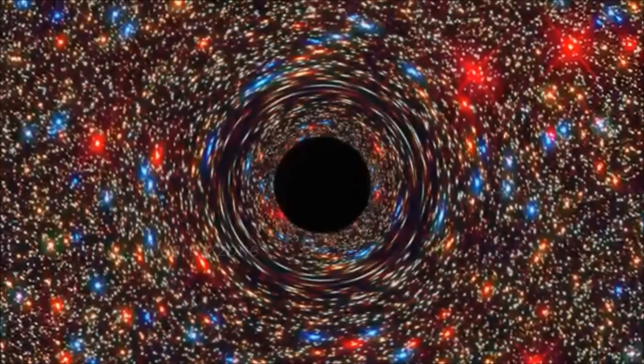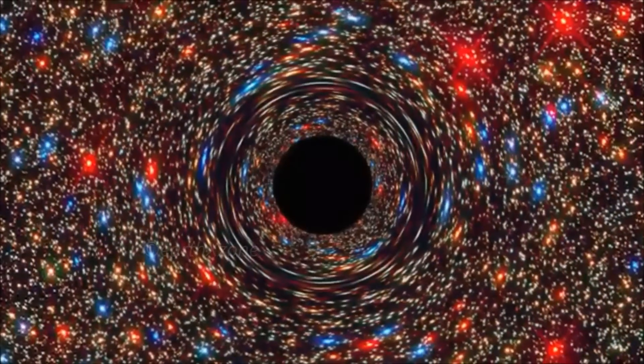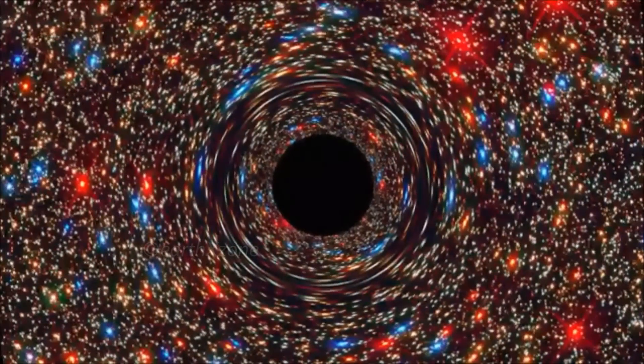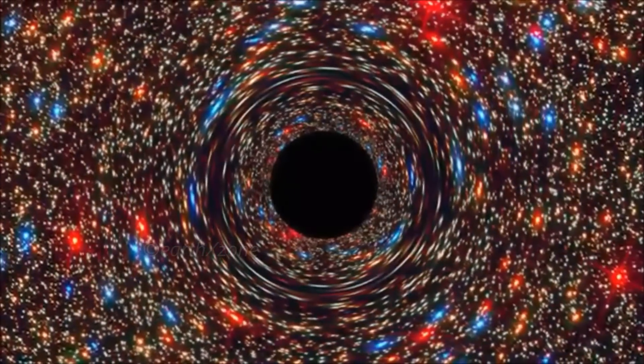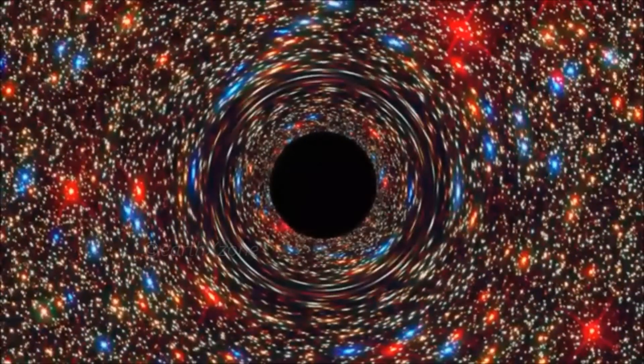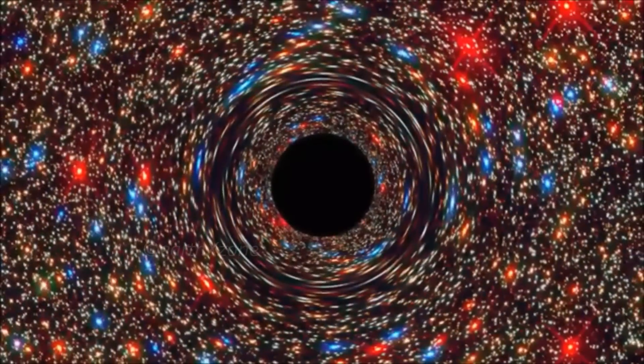The largest supermassive black holes are typically found at the center of large galaxies in areas of the universe with other closely neighboring galaxies. What makes this new discovery so unusual is it was found at the center of a galaxy in a sparse area of the universe, located 200 million light years from Earth, according to NASA.